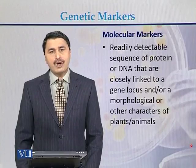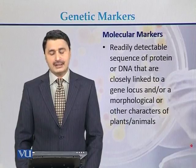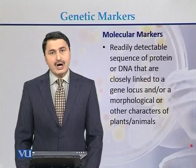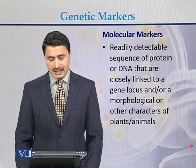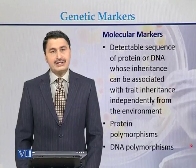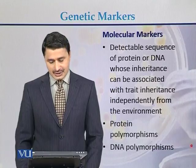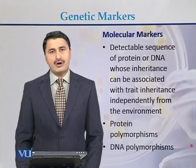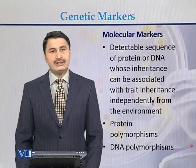The second type of markers is molecular markers. What are molecular markers? A molecular marker is a readily detectable sequence of protein or DNA that is closely linked to a gene location. Molecular markers can be polymorphisms, as well as morphological or other characteristics of plants or animals. They are a detectable sequence of protein or DNA whose inheritance can be associated with traits independently from the environment, meaning there should be no effect of the environment on the phenotypic characters.